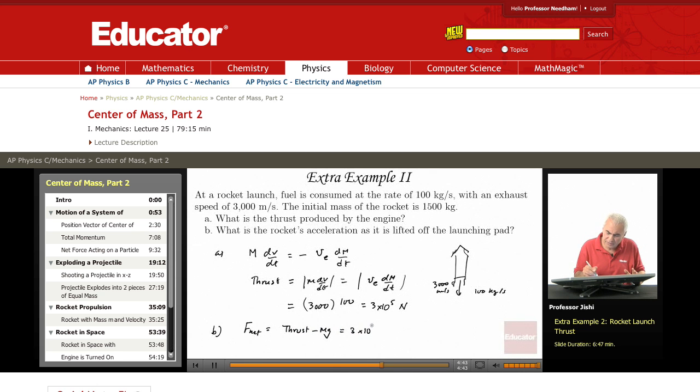The thrust is 3 times 10 to the 5 Newtons and mg, where m is 1500 kilograms and g is 9.8, let's say 10. So that's minus 15,000 Newtons, or 0.15 times 10 to the 5 Newtons. This is the net force, which is 2.85 times 10 to the 5 Newtons. So what is the acceleration? F net over m.